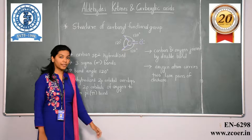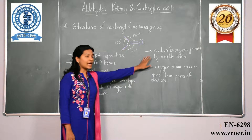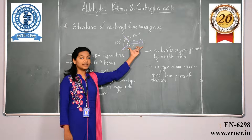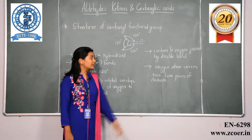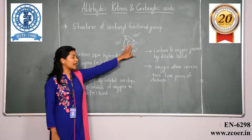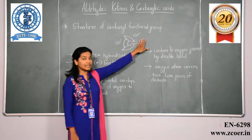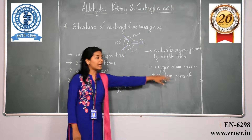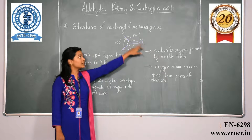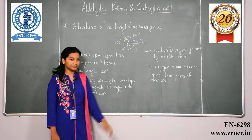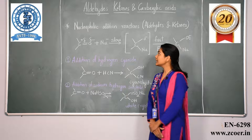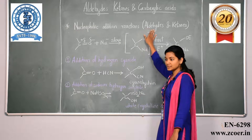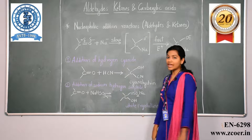In this bond structure, the carbon and oxygen are joined with a double bond. The oxygen atom carries two pairs of lone electrons, as shown in the structure. The next topic we will see under this chapter is nucleophilic addition reactions, specifically for aldehydes and ketones.